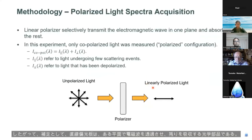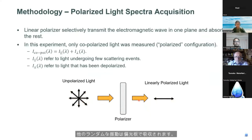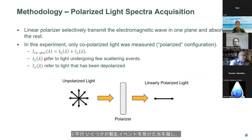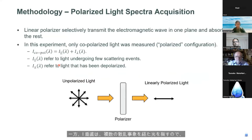As a side note, the linear polarizer is an optical component that transmits electromagnetic waves in one plane and absorbs the rest, as shown by this simple setup where unpolarized light passes through a polarizer and only one plane of linearly polarized light is produced while other random oscillations are absorbed. In this experiment, only co-polarized light was measured, which we call the polarizer configuration. This comprises two components: I-parallel and I-perpendicular. I-parallel refers to light that has undergone few scattering events and has mainly maintained its polarization state, whereas I-perpendicular refers to light that has undergone multiple scattering events and has been depolarized while traveling inside the fruit tissue.